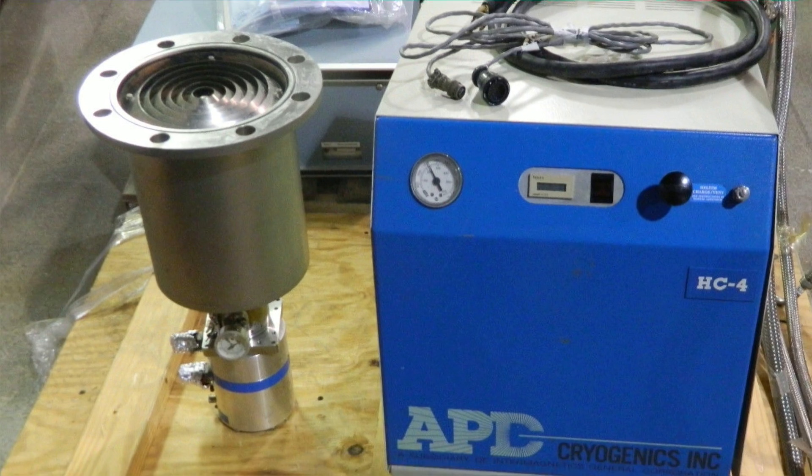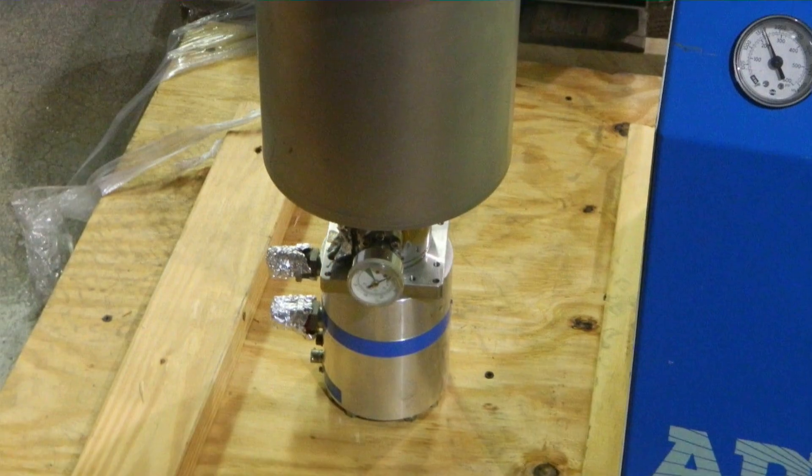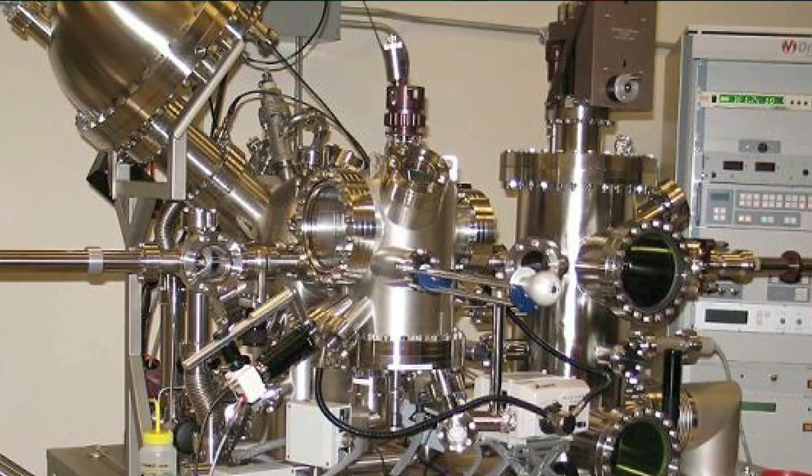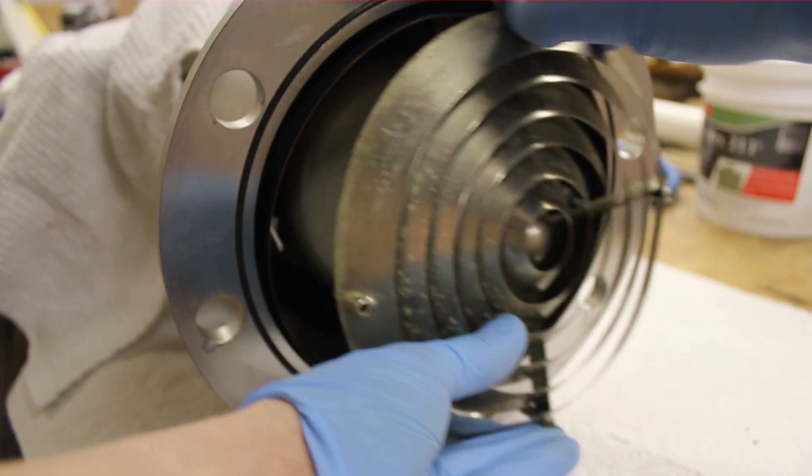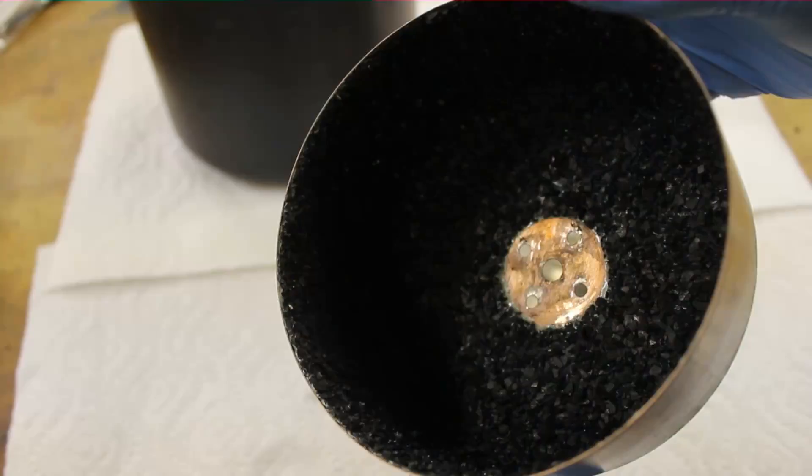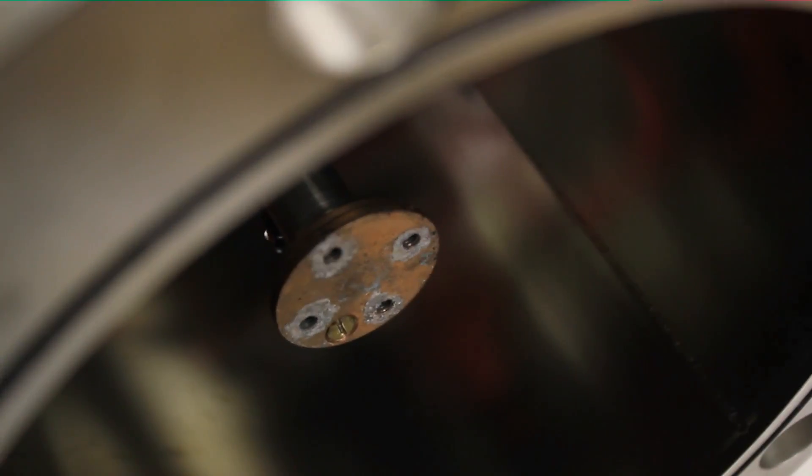Recently I got a cold head helium compressor and hoses off eBay for cheap. It was previously set up as a cryopump. These use an ultra-high vacuum system to trap gas molecules and achieve lower ultimate pressures. I just want to liquefy stuff, so I removed the inlet baffling array. They were attached with metal gaskets that look to be made of indium. The array seems to be coated in charcoal. Now it's just the cryo-cooler's cold finger.